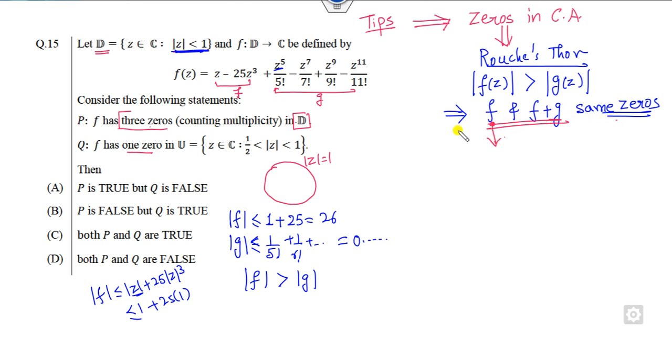What are the zeros of F? F is here. How many zeros are there? It's degree three, so F has three zeros. Similarly, this also has three zeros. So it means the first answer is my correct option. P is false. The D and B options are cancelled.